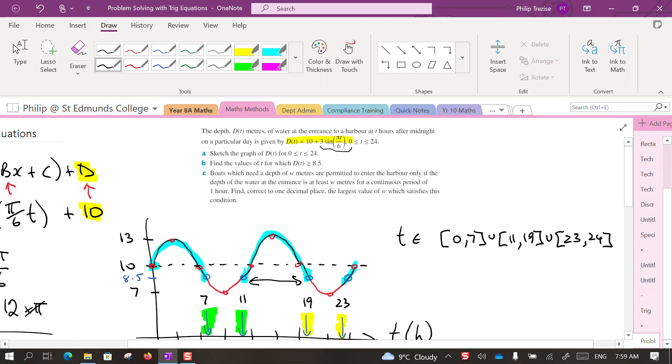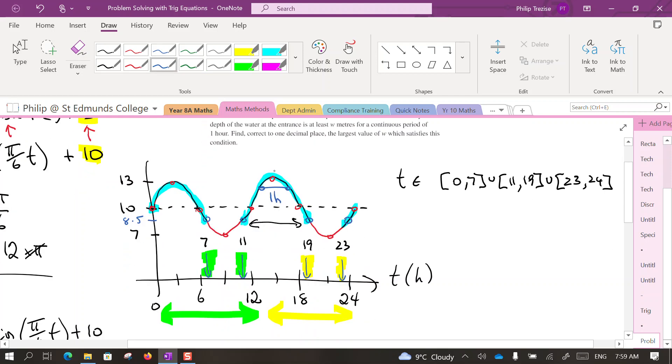Now we want to cut that back to be only between a certain depth for one hour, so that means we're going to have to move this point higher up the graph. So this is one hour only. Now we can see that it's symmetrical around this point here. That point would be at 15, which we already knew from our sketch.